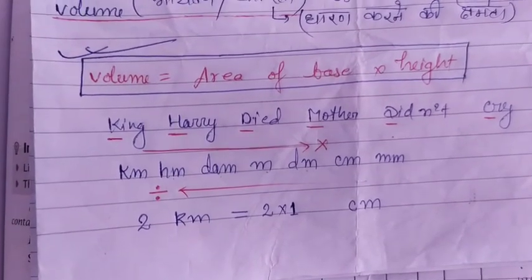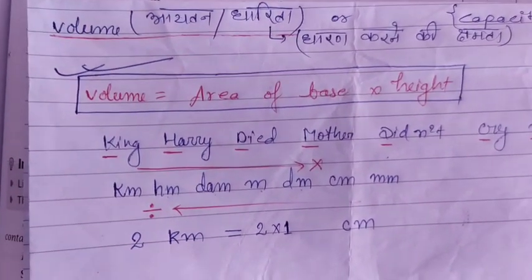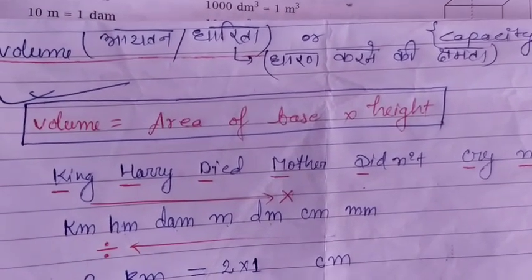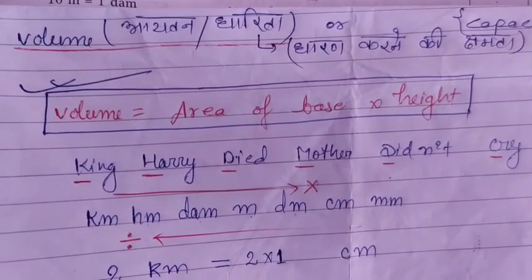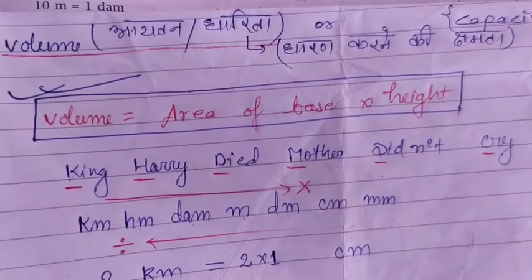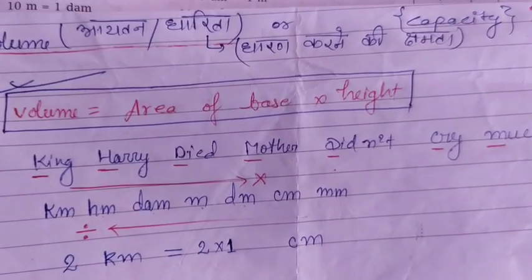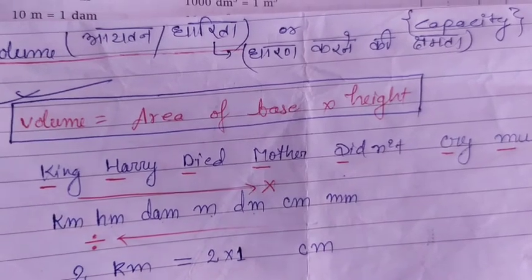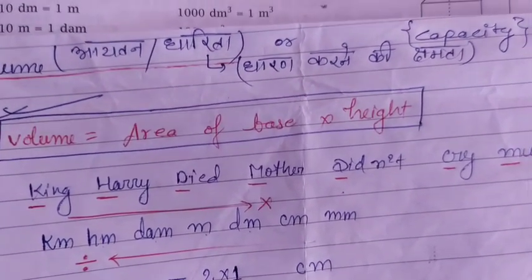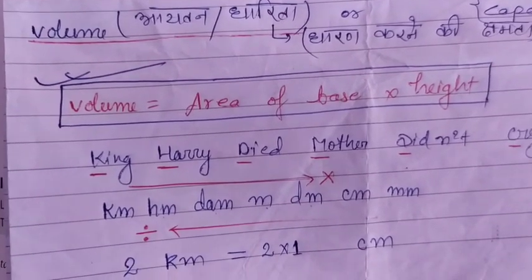Today we will begin the new topic that is volume. In Hindi we call it Ayatan or Dharita, which means holding capacity.